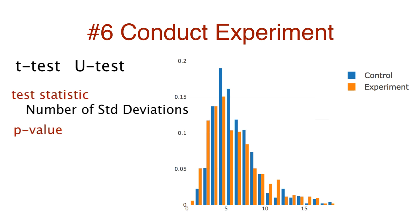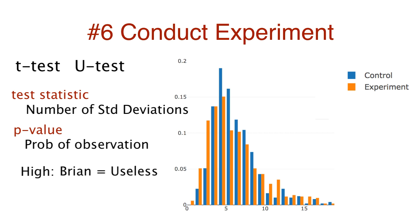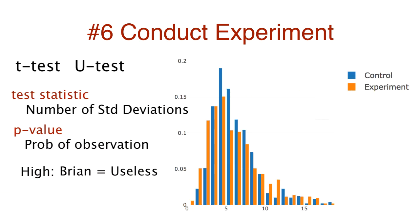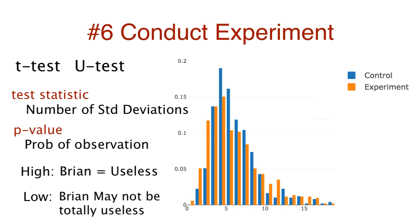Get a test statistic and a p-value. Test statistic: the number of standard deviations. P-value: the probability of observing such a test statistic given the null hypothesis is true. So high p-values? We can't reject the null hypothesis and Brian's feature doesn't make a difference — toss the idea out the window along with Brian. Low p-values: reject the null hypothesis and move on to the next phase of decision-making.